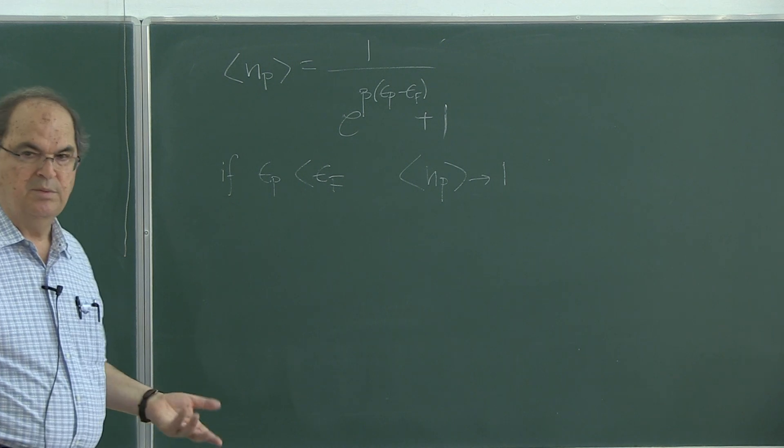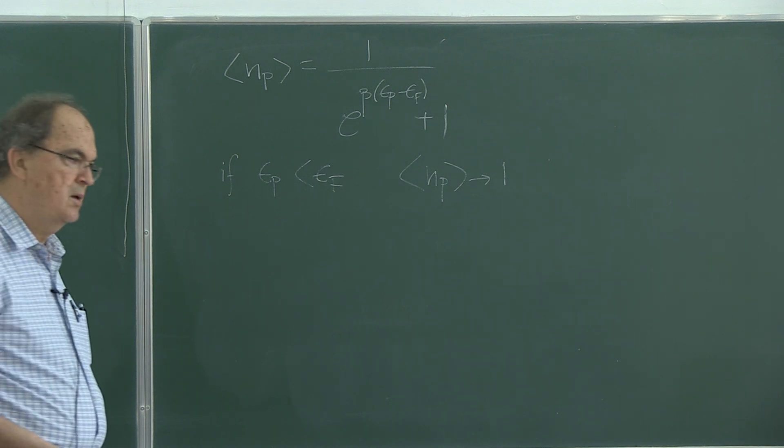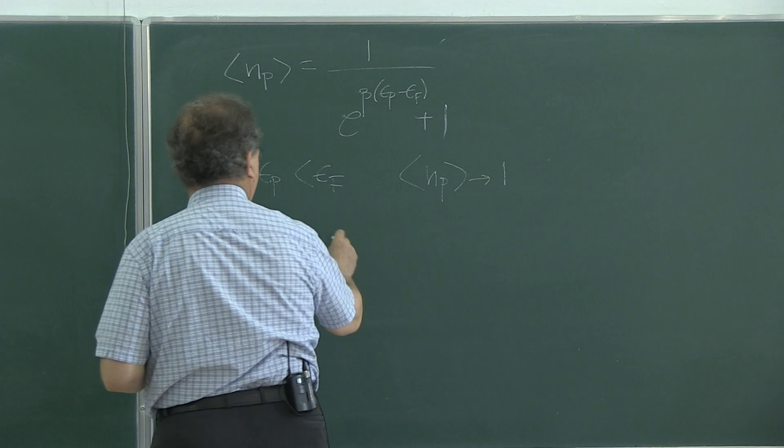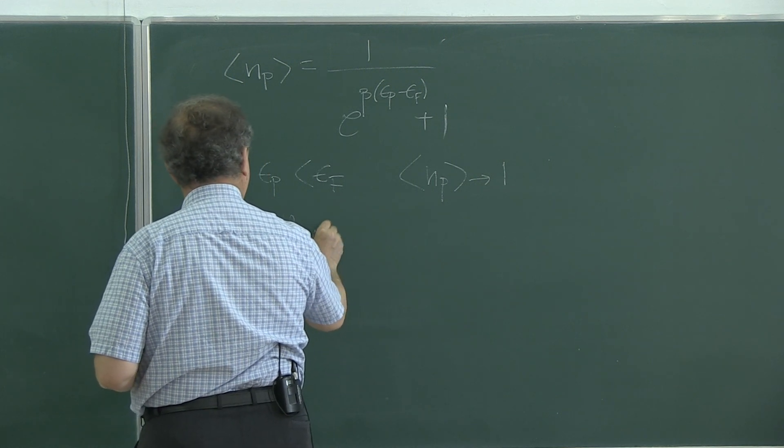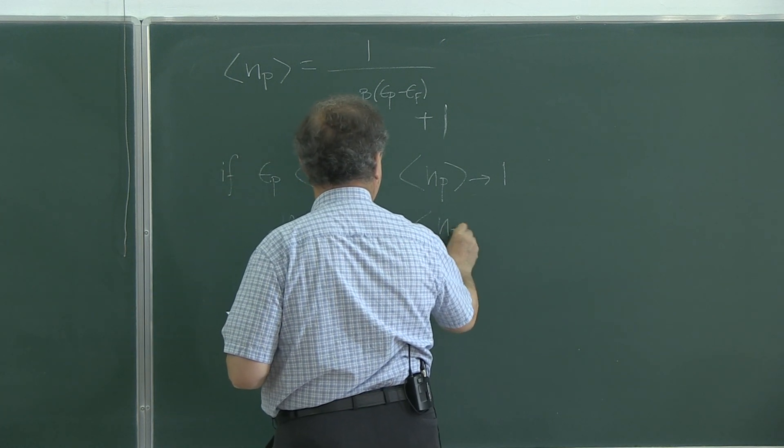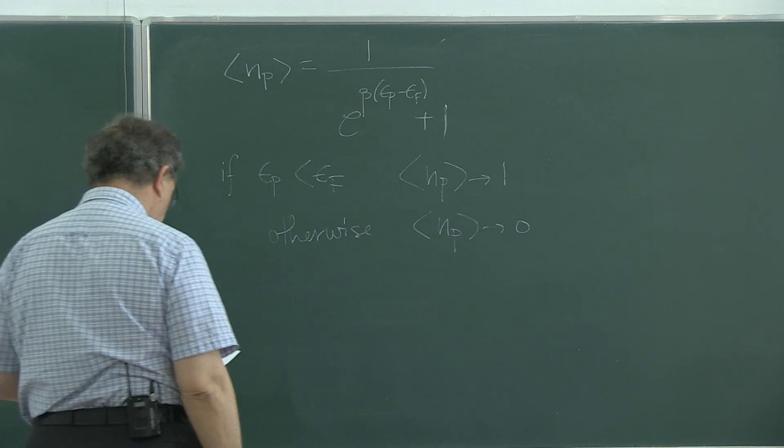We have two possibilities in this case of fermions. Either a state is occupied or empty. You cannot put two particles in a state. Pauli exclusion principle forbids that. Unlike the boson gas, you can put any number of particles in a state there. Otherwise, this number is zero.